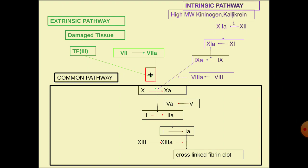In the common pathway, activated factor 10 along with activated factor 5 activates factor 2 to factor 2a. This activated factor 2 in turn activates factor 1 to factor 1a, also known as fibrin. Fibrin subunits come together to form fibrin strands, and factor 13 acts on fibrin strands to form a fibrin mesh, which helps to stabilize the platelet plug.